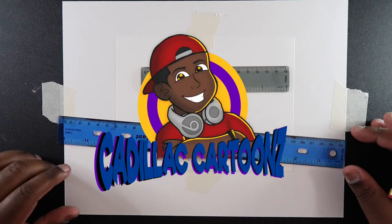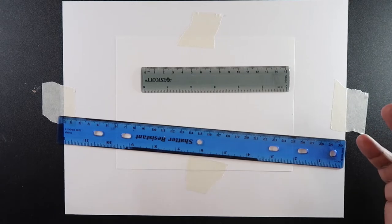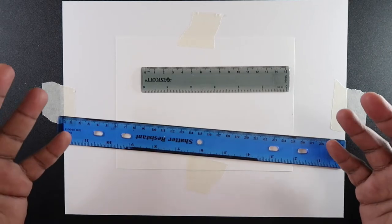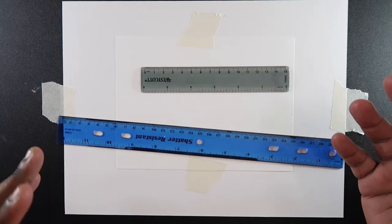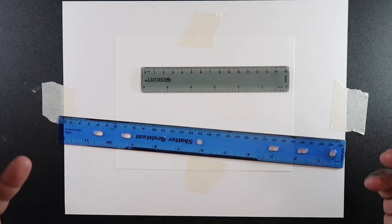What's good everybody, welcome back to Cadillac Cartoons. Today I'm going to show you how to draw in perspective. What is perspective? You're basically drawing three-dimensional objects on a two-dimensional plane. That may not make sense now, but watch the rest of the video so you can get a better understanding.